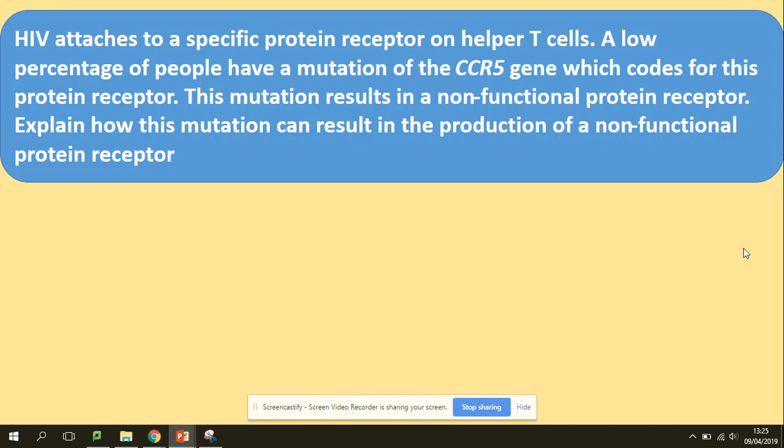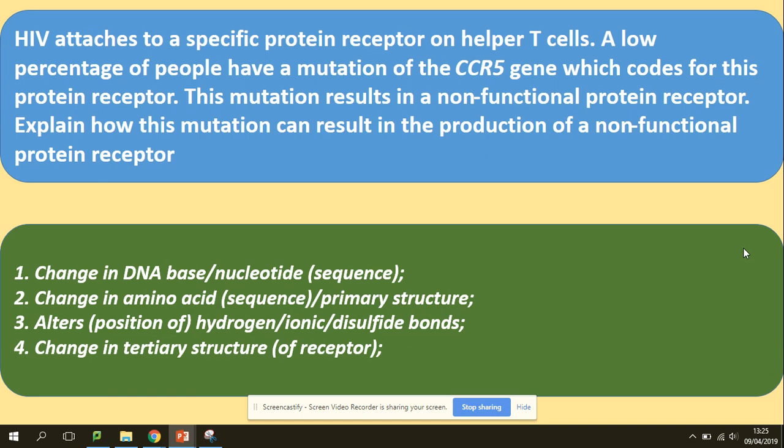Exam question: HIV attaches to a specific protein receptor on helper T cells. A low percentage of people have a mutation of the CCR5 gene, which codes for this protein receptor, resulting in a non-functional protein receptor. Explain how this mutation can result in the production of a non-functional protein receptor. The model answer: a change in the DNA base sequence causes a change in the amino acid sequence, which alters the hydrogen bonds, changing the tertiary structure of the receptor protein.